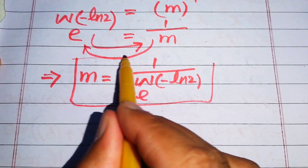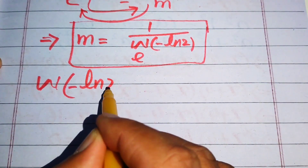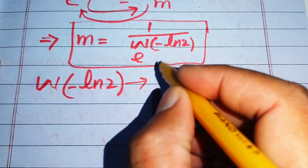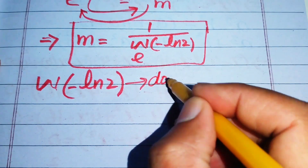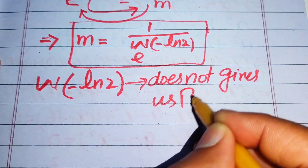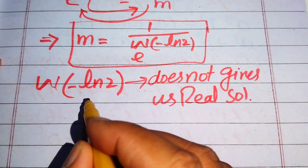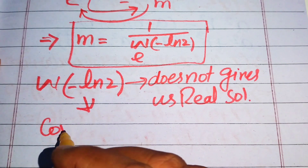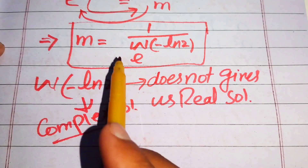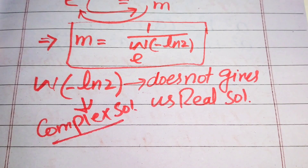This is the final answer. However, the value of W of negative log 2 does not give us a real solution — it gives a complex solution. So this means the Lambert W function here yields a complex solution, and that is our final answer. Thank you so much for watching this video; please subscribe to my channel for more exciting videos.